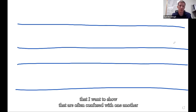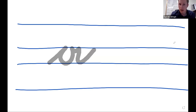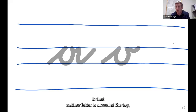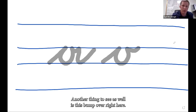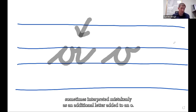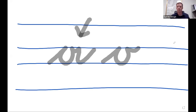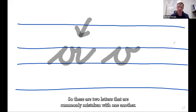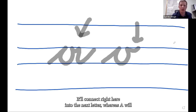Two other vowels often confused with one another are A and O. What's important to see is that neither letter is closed at the top, which is a bit different from Latin script cursive. There is also a bump-over in the A that is sometimes mistakenly interpreted as an additional letter added to an O. Understanding that A is a slightly longer letter than O is really helpful. The O connects into the next letter from its middle portion, whereas A will connect from the bottom.